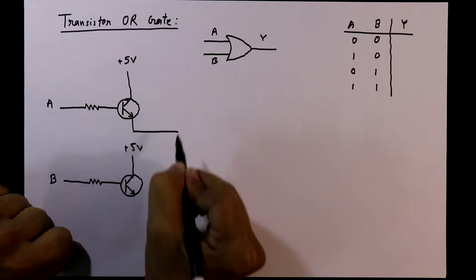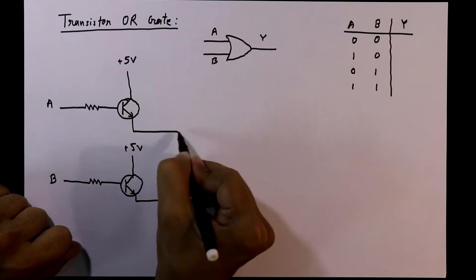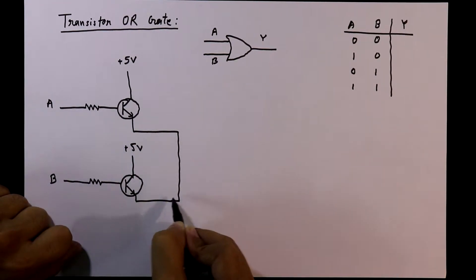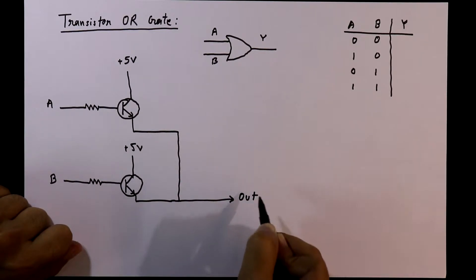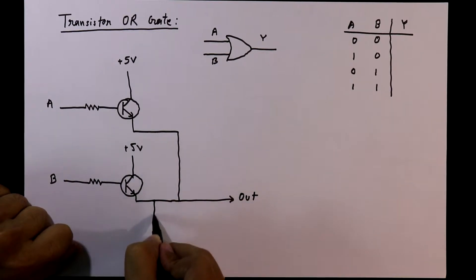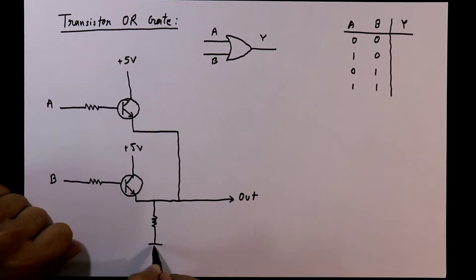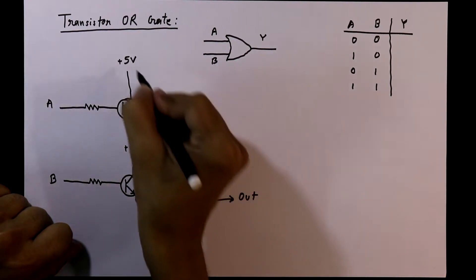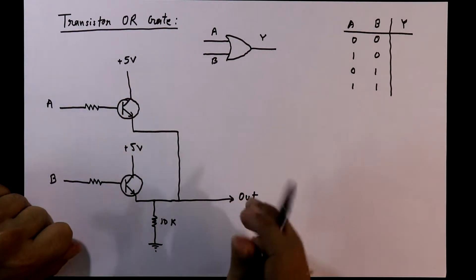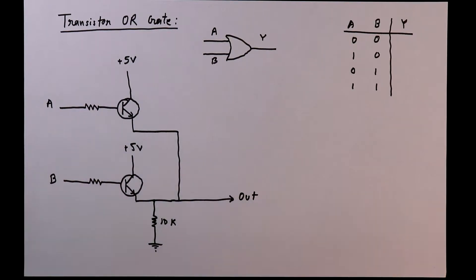Both the emitters are connected together and from here we will take the output. We also have to connect a pull-down resistor with the output. The value can be 10K ohms for a 5V power supply. So this is the OR gate circuit using transistors.